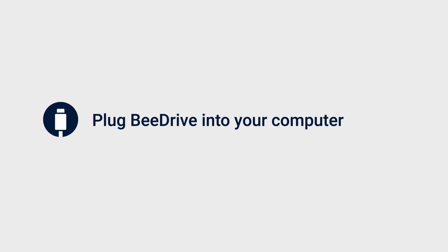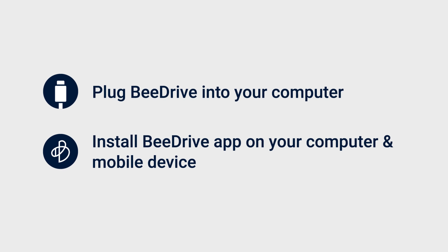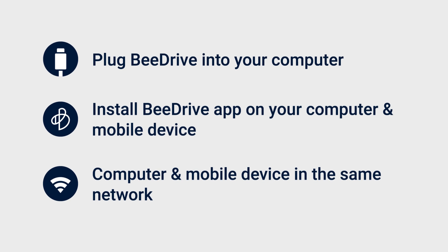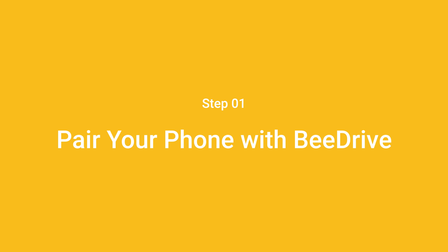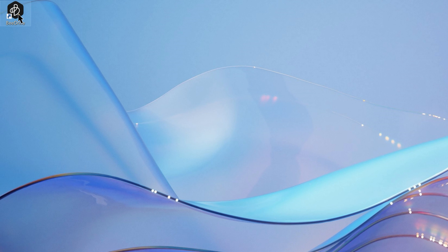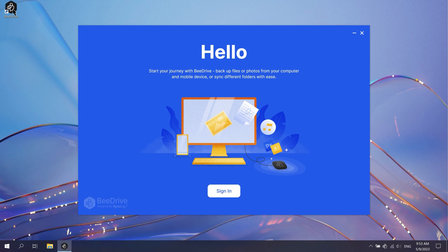First, plug B-Drive into your computer. Then, install the B-Drive app on your computer and phone and make sure they're all on the same network. Open B-Drive on your computer and sign in with your Synology account.